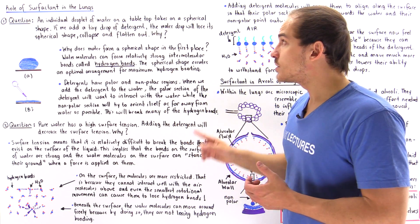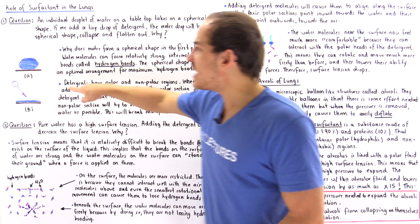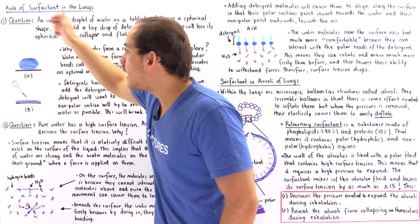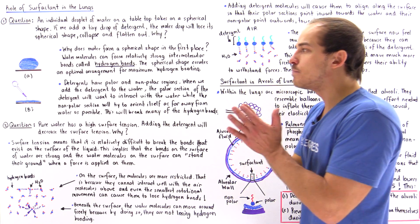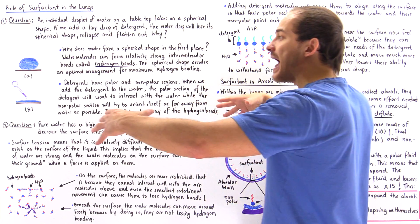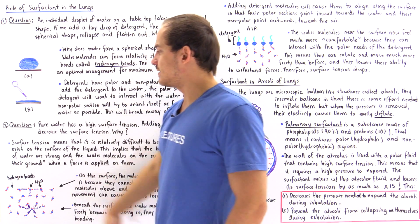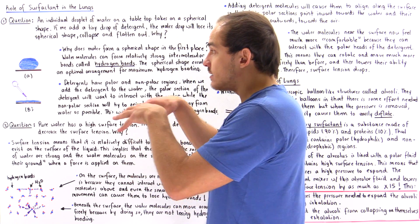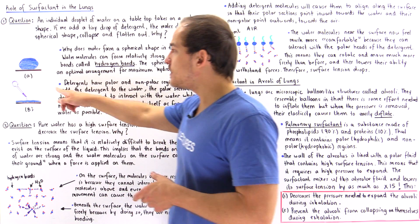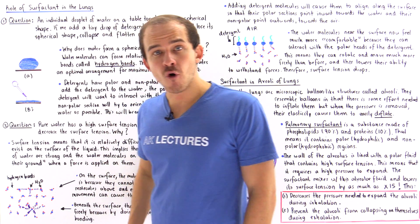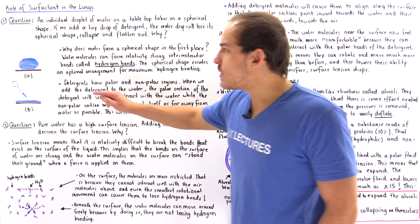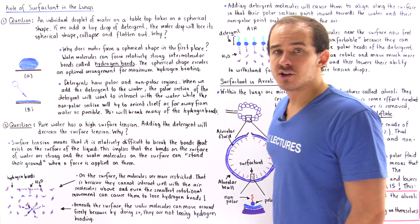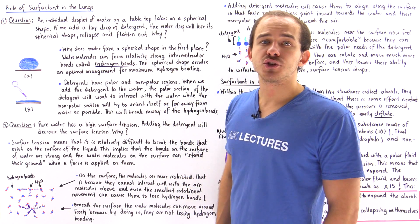An individual droplet of water placed on a tabletop will basically form a spherical shape, as shown in diagram A. If we then add a tiny drop of detergent using a pipette onto that droplet of water, that droplet will break its spherical shape and flatten out and spread along the surface of the table, as shown in diagram B. Why does this take place? Let's begin with diagram A and answer why water forms that spherical shape. If we examine inside that water droplet at the microscopic level, we see that the individual water molecules are actually forming relatively strong intermolecular bonds known as hydrogen bonds.